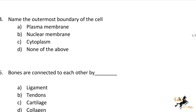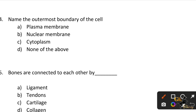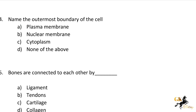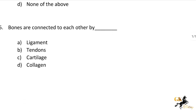Next question: Name the outermost boundary of the cell. Option A: Plasma membrane. Option B: Nuclear membrane. Option C: Cytoplasm. Option D: None of the above. The answer is Option A: Plasma membrane — the outermost boundary of the cell.